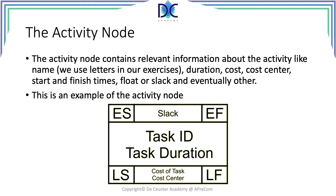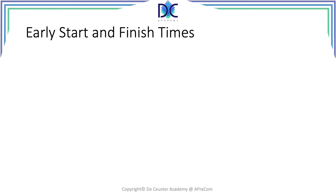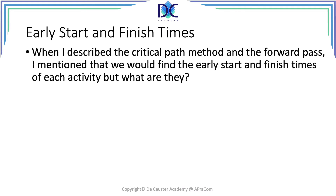This is a typical activity note, but there can be other notes with different information, sometimes added in different places. Let's have a look at the early start and early finish times. When we look at the critical path method that I described before, I mentioned that we have what we call a forward pass and a backward pass, and those two elements are quite important.